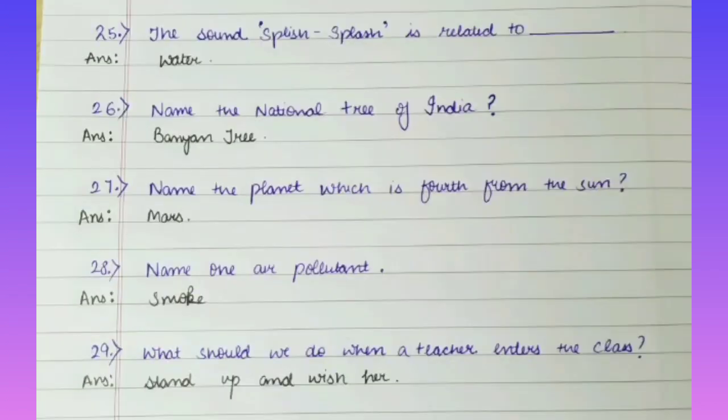Question No. 25: The sound 'Splish Splash' is related to Dash. Answer is Water. Question No. 26: Name the national tree of India. Answer is Banyan Tree. Question No. 27: Name the planet which is fourth from the sun. Answer is Mars. Question No. 28: Name one air pollutant. Answer is Smoke.